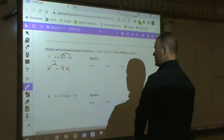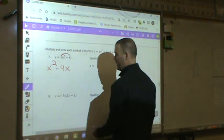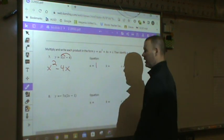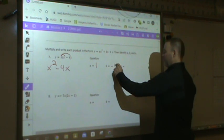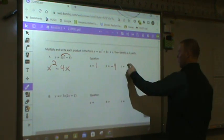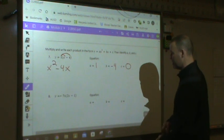What is A? What is B? What is C? Well, what's always in front of a number but never written? A 1. Therefore, A is 1. B is going to be negative 4. And there is no constant term. So, if there is no constant term, its value is 0.